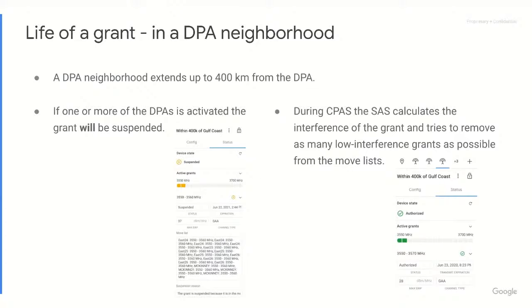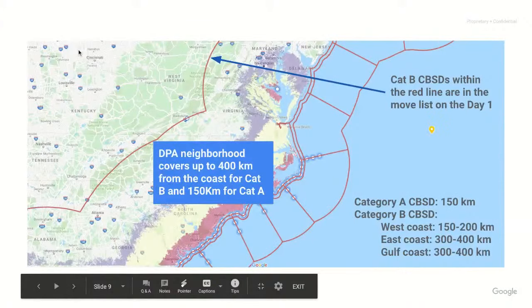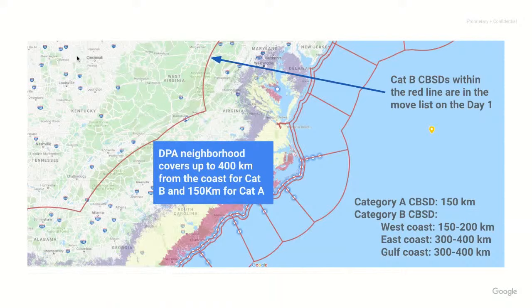You can see all this in the SASS portal. On day one, in that screenshot on the left, you can see that this grant has been placed on several move lists, visible in the SASS portal. Then during CPAS, in this example, the SASS determined that the grant did not cause interference to the DPAs and removed the grant from those move lists. Looking at the map, you can see that if the CBSD is in the clear area, most likely during CPAS the CBSD will be moved off the DPA move list.